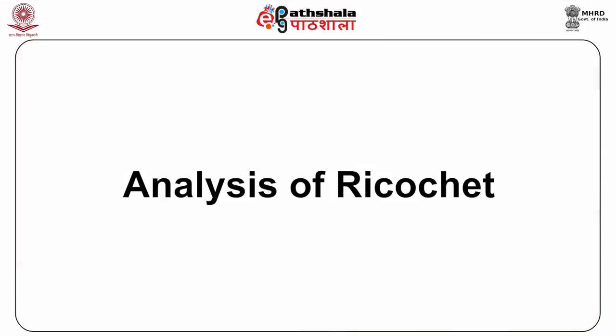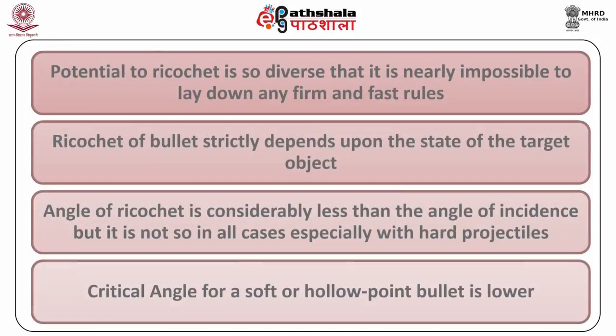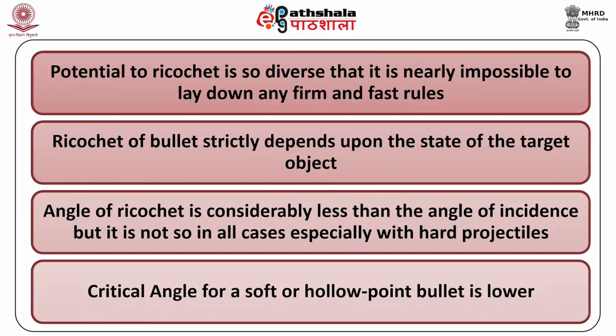Analysis of ricochet affecting parameters: the potential to ricochet is so diverse that it is nearly impossible to lay down any firm and fast rules. However, there are a few generalizations which may be applied. The ricochet of a bullet strictly depends upon the state of the target object. The evenness of the surface also plays an important role. In most cases, the angle of ricochet is considerably less than the angle of incidence, but this is not so in all cases, especially with hard projectiles.